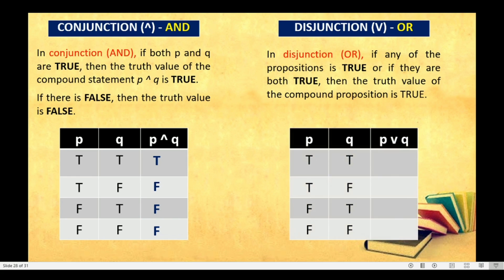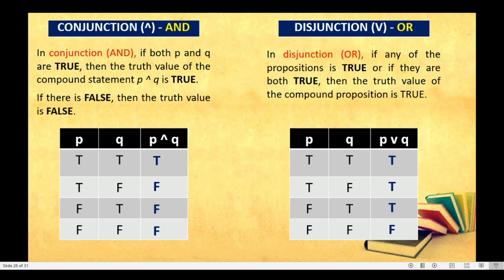Let's proceed to the truth table of disjunction, P or Q. True or true — there are two trues, so the truth value is true. True or false — there is a true, so that is true. False or true — there is a true, so that is true. Then false or false — there is no true to be found, so the truth value is false. That is the law of disjunction — it only needs one true for the truth value to be true.